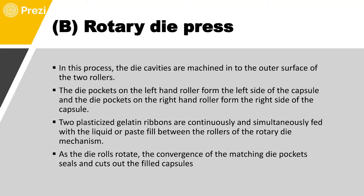The soft gelatin capsule comprises two parts — left and right. Two plasticized gelatin ribbons are continuously and simultaneously fed with the liquid or paste to be filled. Two sheets of gelatin are passed between the rollers and the material to be encapsulated is filled into the rollers in a precisely calculated amount, so there is no wastage. As the dies rotate further, the convergence of the matching die pockets seals and cuts out the filled capsules.